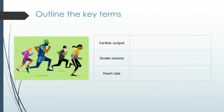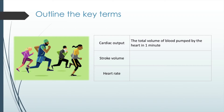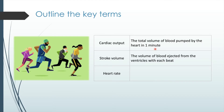Cardiac output is the total volume of blood pumped by the heart in one minute. Stroke volume is the volume of blood ejected from the ventricles with each beat. Notice the key difference: stroke volume is per beat, and cardiac output is per minute.